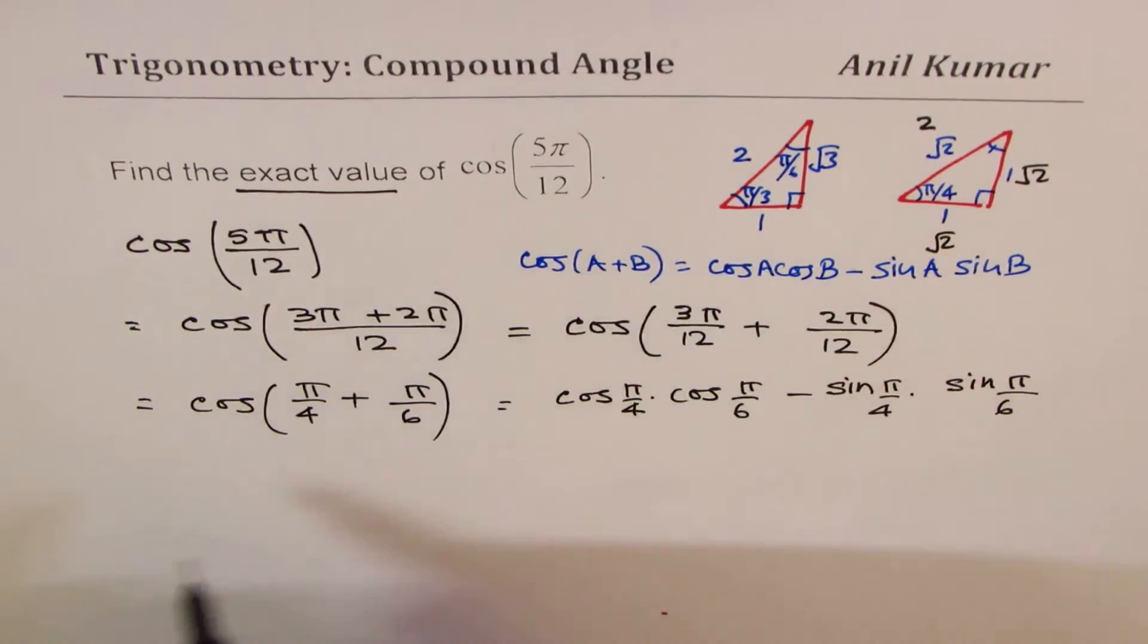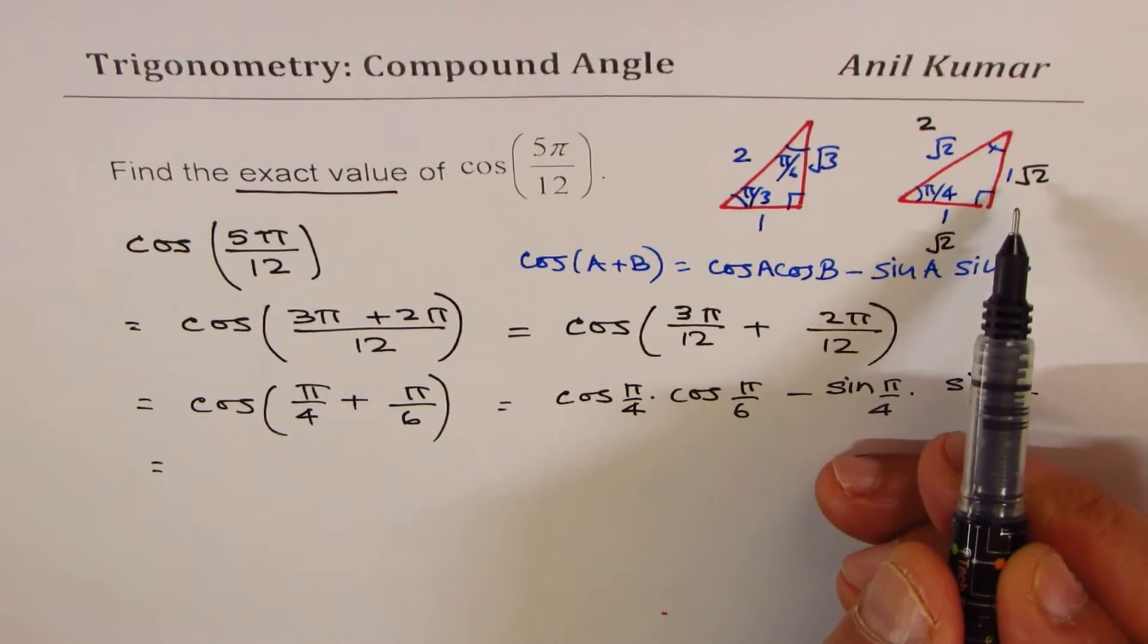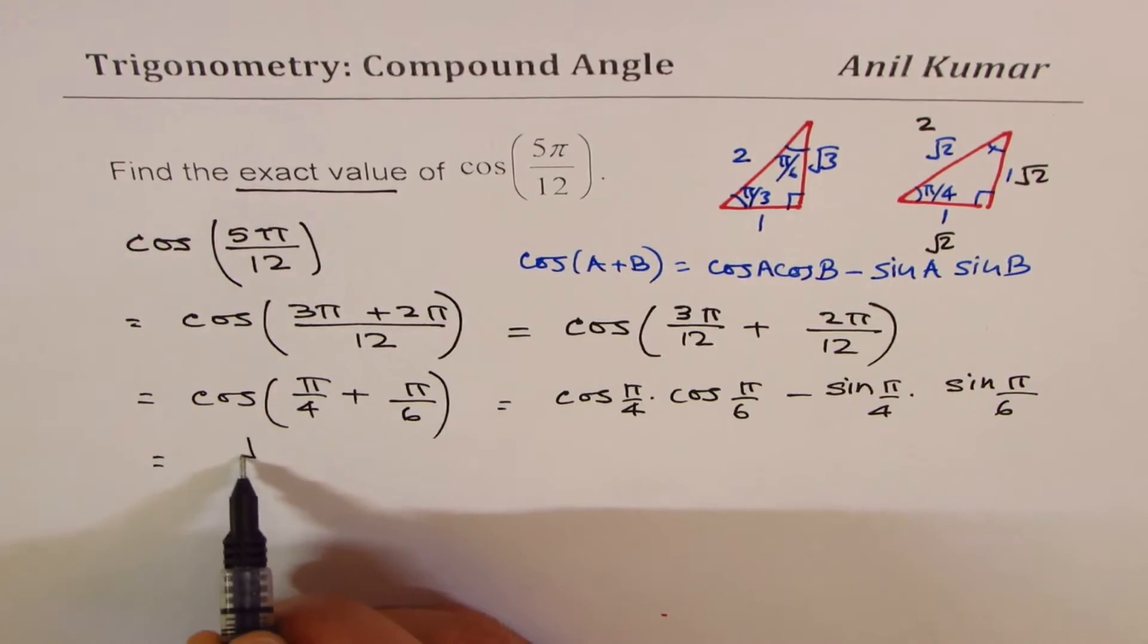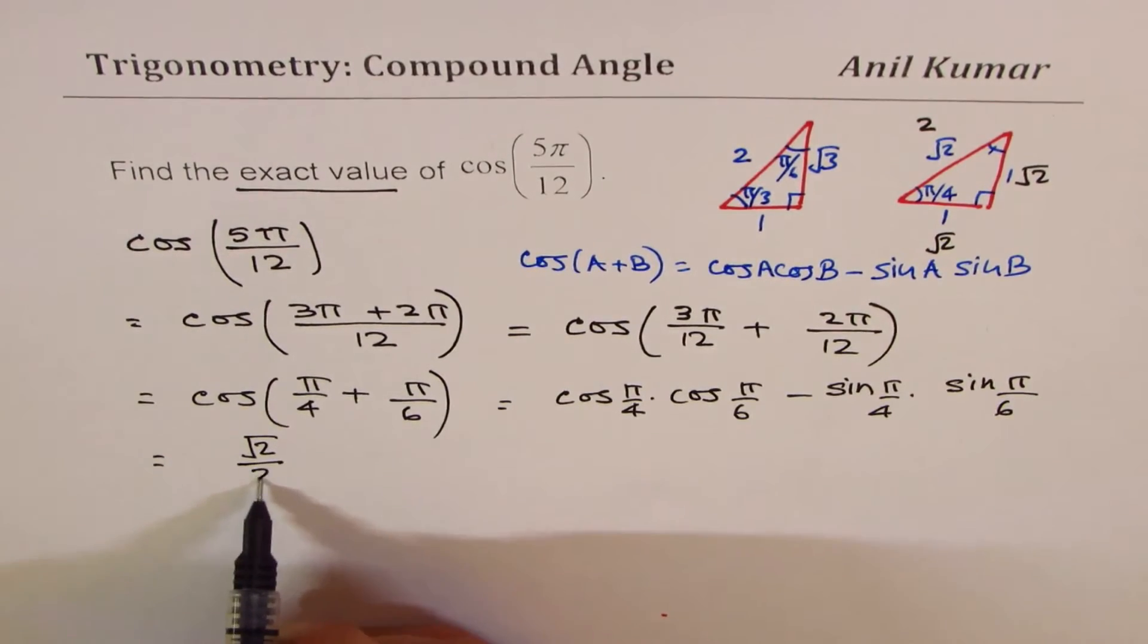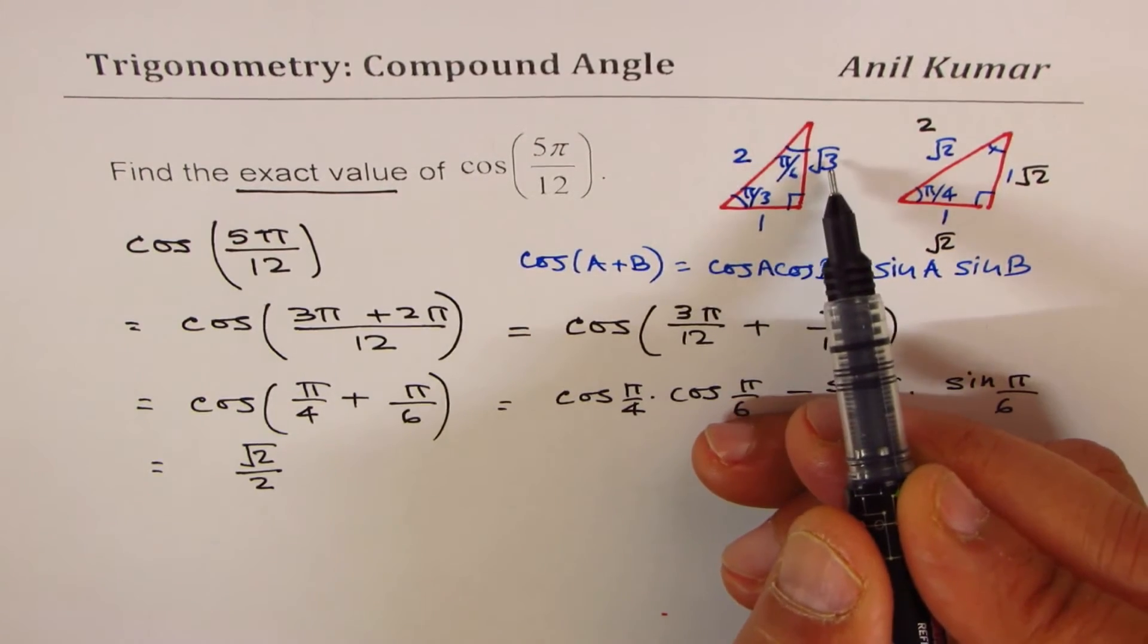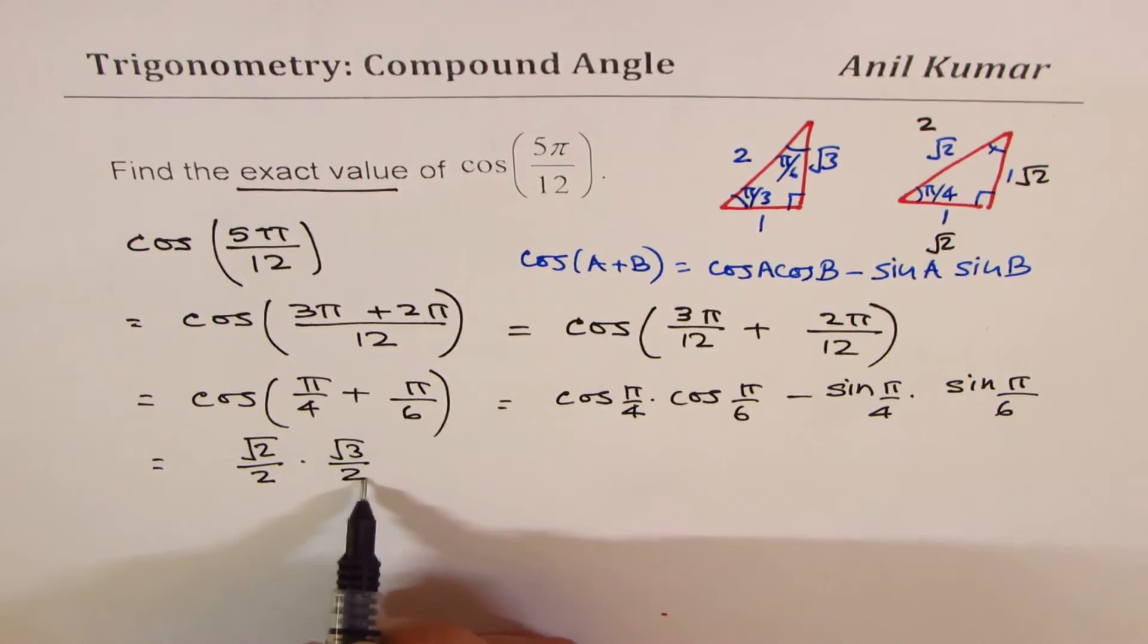Now you can directly read the values. Cos(π/4), I prefer to use √2 over 2 here. So we'll write this as √2/2. For π/6, we are looking from this side. Adjacent side is √3, so I'll multiply by √3/2.